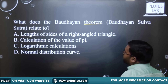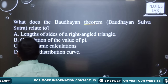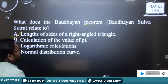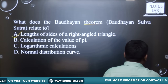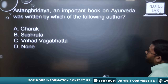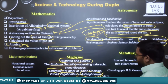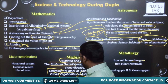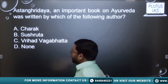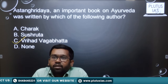Regarding the Baudhayana theorem question: Baudhayana is also related to pi, but the Baudhayana theorem specifically is related to the lengths of the sides of a right angle triangle — similar to the Pythagorean theorem. That is the answer. For the Ashtangahridaya question, we discussed that Ashtangahridaya was written by Brihat Vagbhata, so Brihat Vagbhata is the answer to that question.